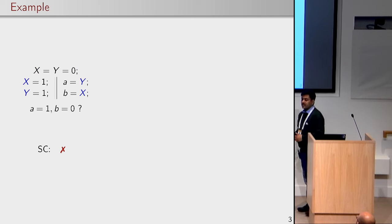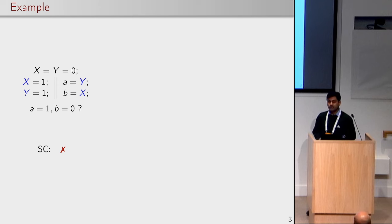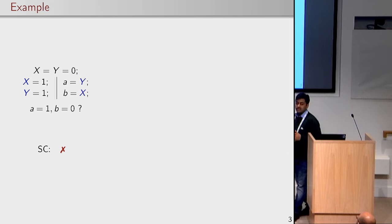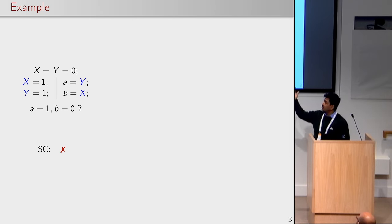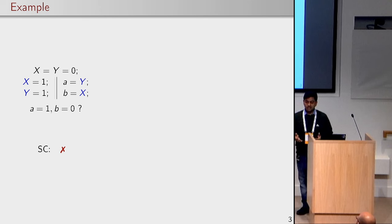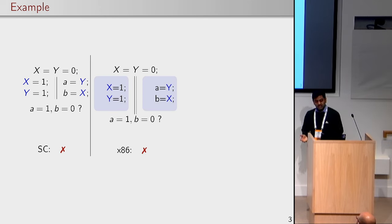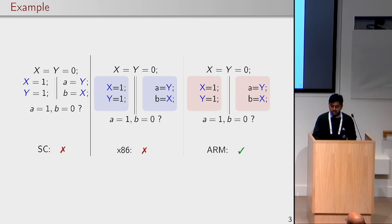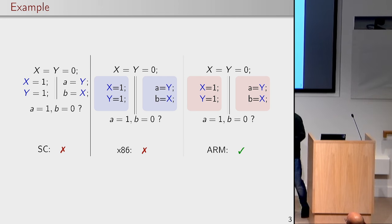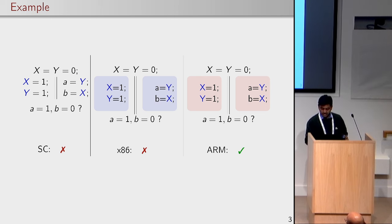I will start with an example to understand this phenomena. Here is a message passing example. It is quite well known that x and y are 0 and in the left thread we are writing two values on x and then y, and on the other thread we are reading it in the opposite order. If we consider sequential consistency this execution of a equal to 1 and b equal to 0 is not possible. This is pretty well known.